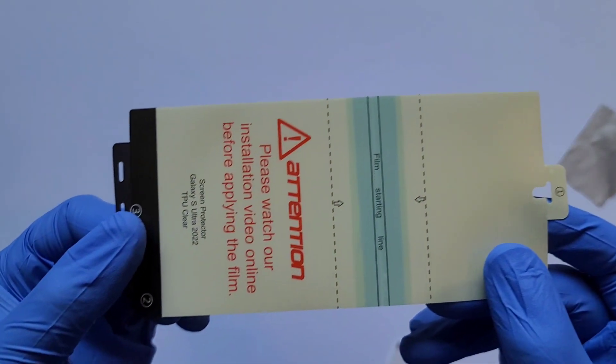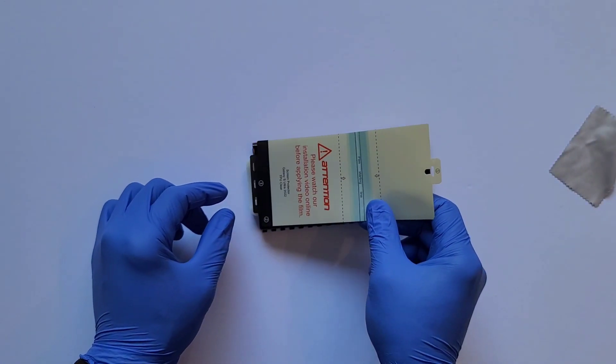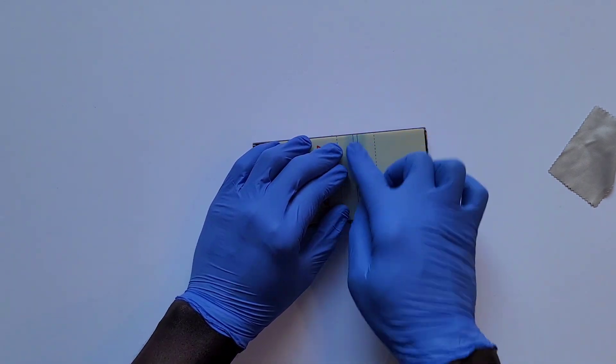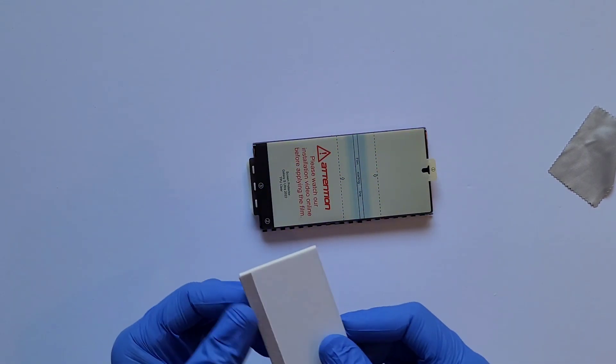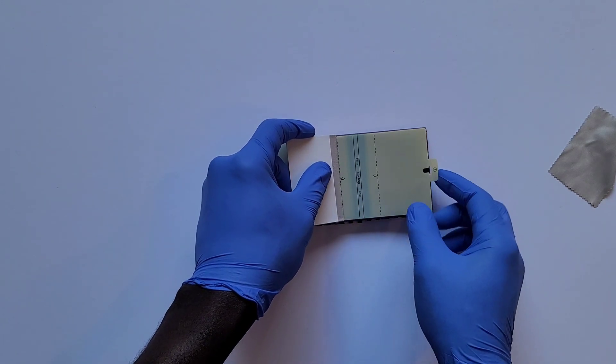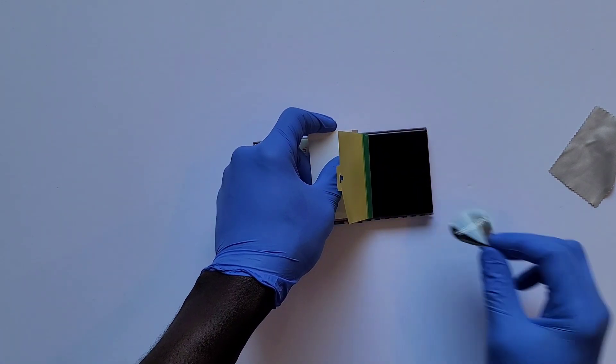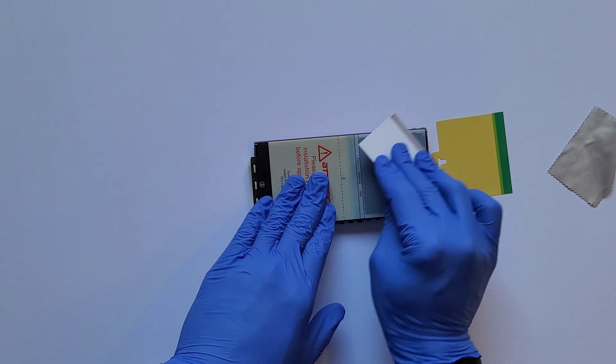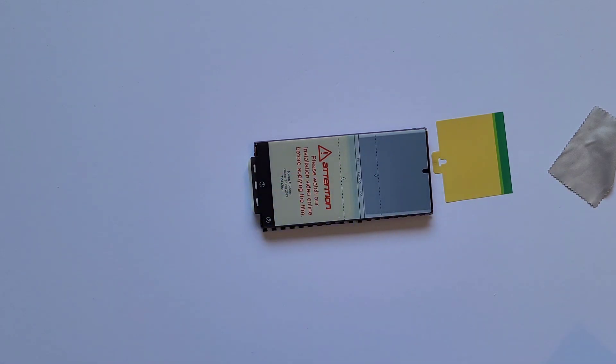Put that black mat on the table so that your phone doesn't move. Now bring the screen protector and then put it on that thing that you just attached to your charging port. Now it's time to remove the thin film. Just scratch it all the way to the end. Rub it and make sure it's sticking properly.